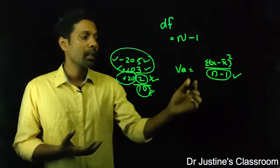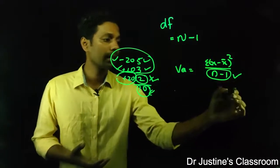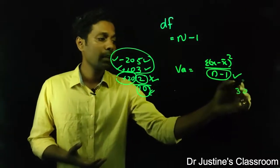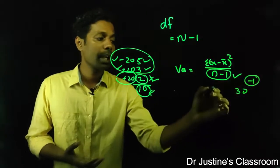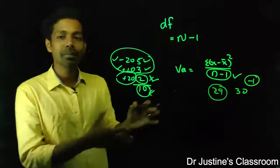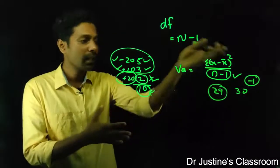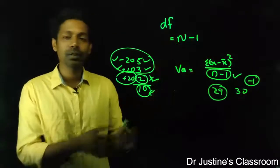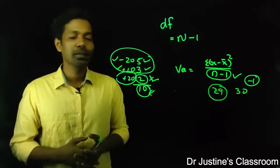We take n minus 1, we take out the freedom of one particular observation. That means if my total sample size is 30, if I take out freedom of one particular observation, I have 29 independent observations based on which the entire data is calculated. So this is the concept of degree of freedom.